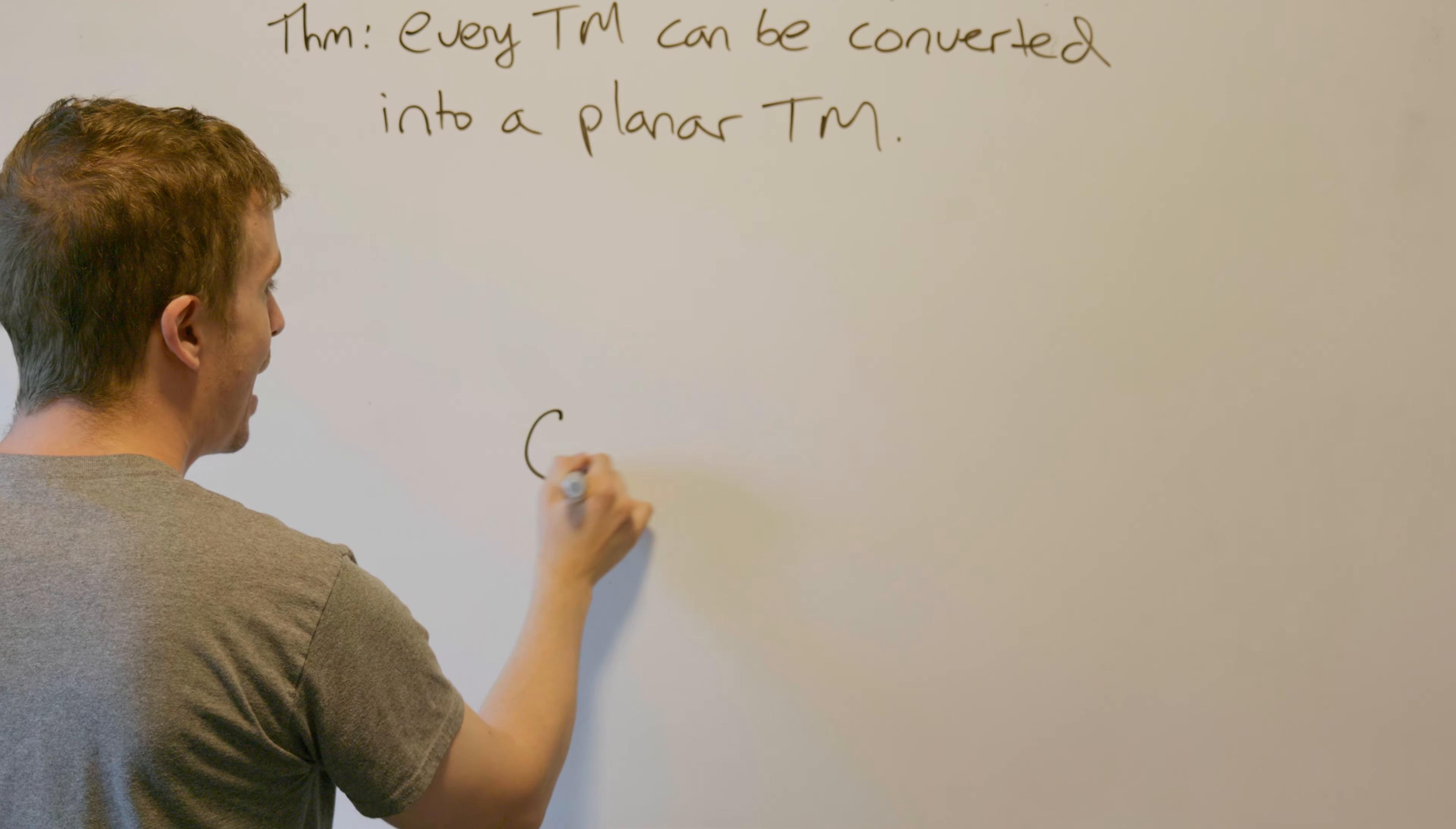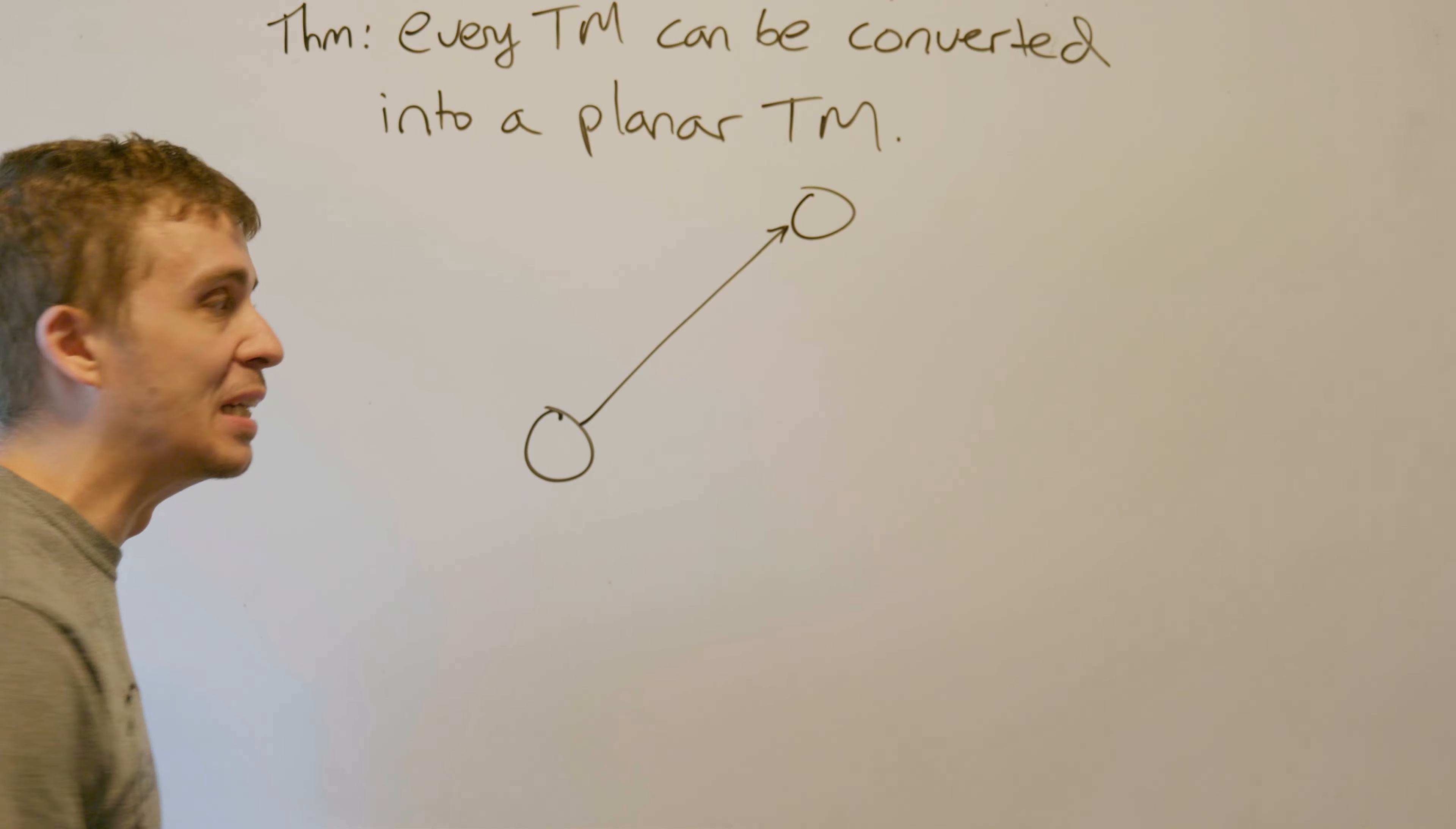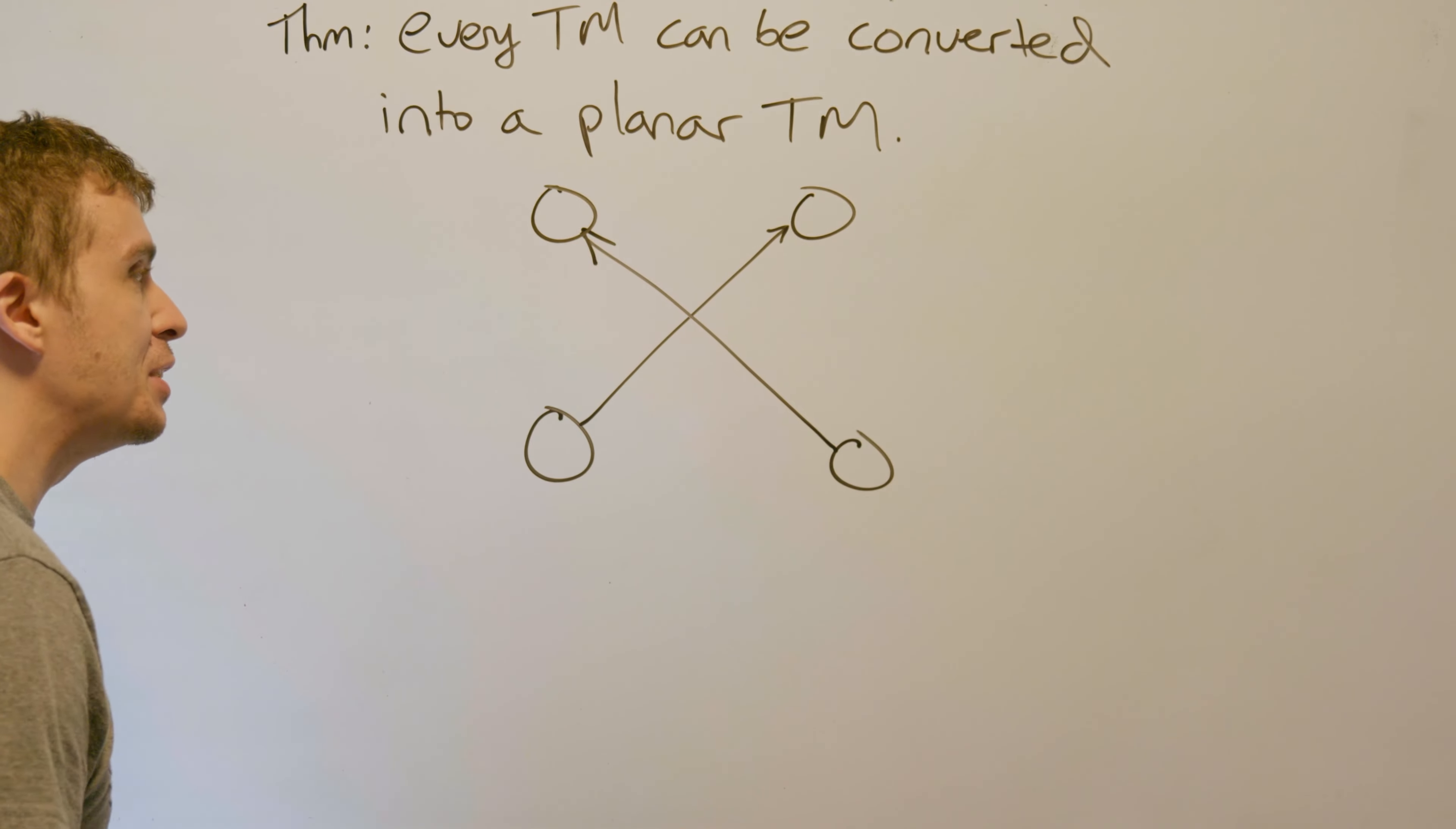Let's look at any pair of possible edge crossings. There's one transition, and it doesn't matter whether they go to the right or to the left, but they cross.